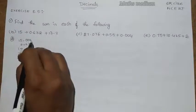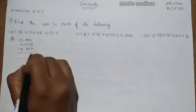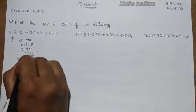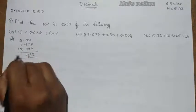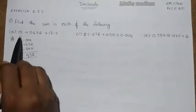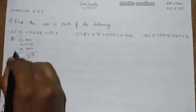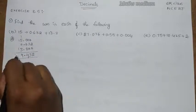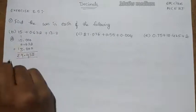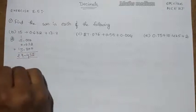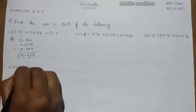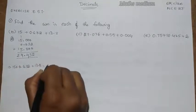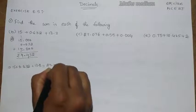Now start addition from right to left. Take 2, here 3, 6 plus 8 is 14. Here we have 4 and another carry goes here. So 5 plus 1 is 6, 6 plus 3 is 9. This is the common point here. 1 plus 1, that is 2. So this is the answer. Finally, 15 plus 0.632 plus 13.8 is equal to 29.432. This is the answer for question number b.